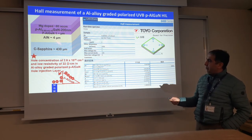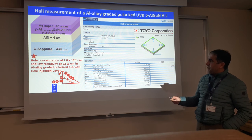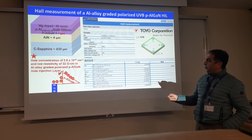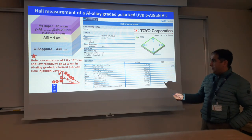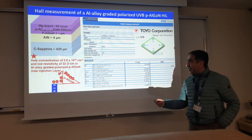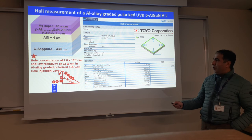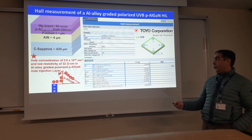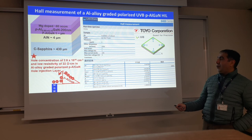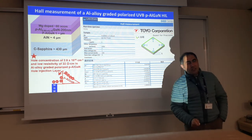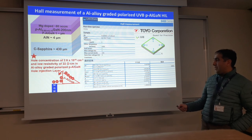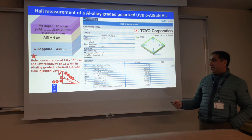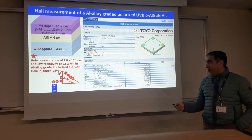Here is the sapphire substrate and aluminium nitride template at 4 microns, and then a P-AlGaN graded layer from 60% to 10% aluminium. With this layer, for the first time at RIKEN, we could measure the hole concentration at 2.6×10^16 per cubic centimeter, with very low resistivity of 22 ohm-centimeter in the aluminium alloy, using a polarization-induced hole injection layer. This measurement was performed at room temperature.